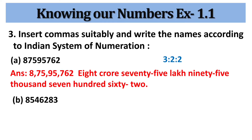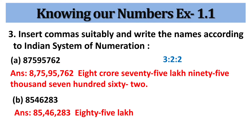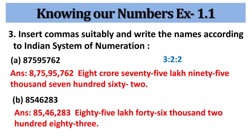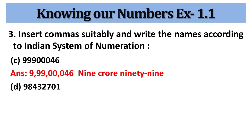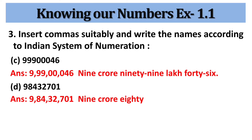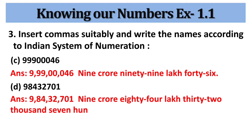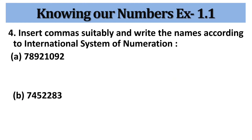In the next problem, putting commas according to this rule, we get 85,46,283. Then we get 9 crore 99,46,000. And in part d we get 9 crore 84,32,701. Here we used the rule 3:2:2.